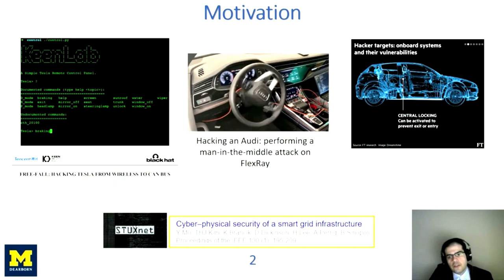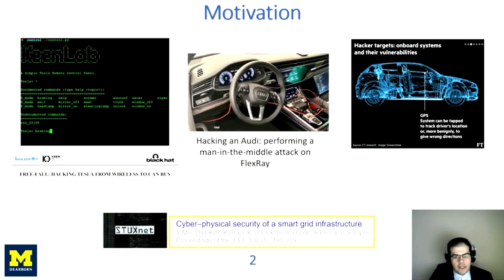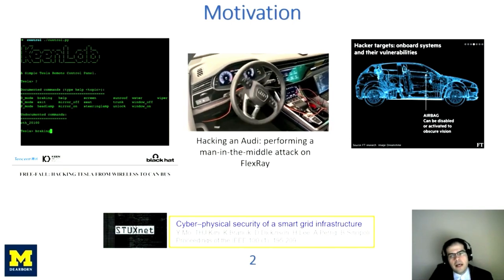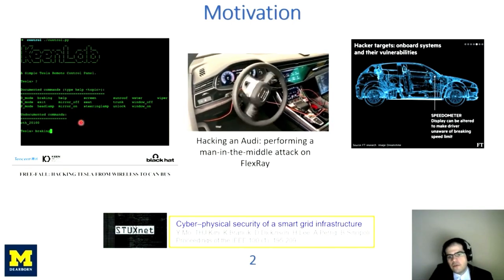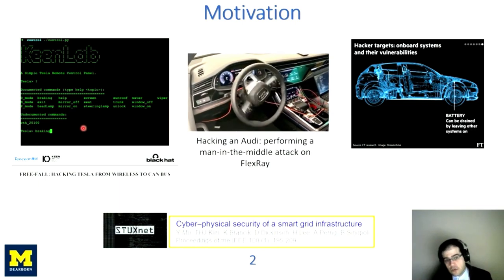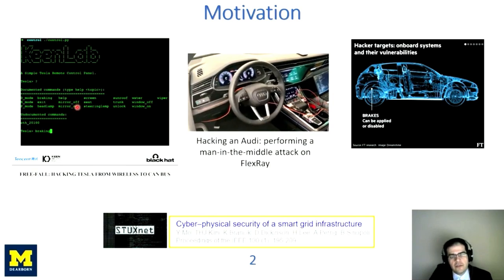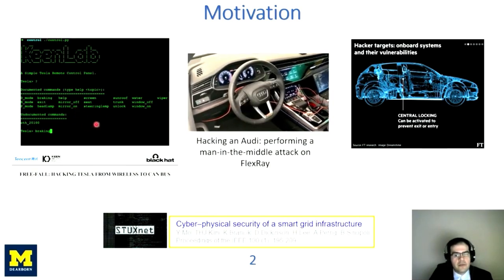The motivation for this work comes from the recent proliferation of hacking the ECUs and in-vehicle networks of vehicles. As we all know, one of the very first famous instances of such attacks, in addition to the great work of Valasek and Miller, was a CAN-based attack on a Tesla vehicle that was demonstrated by Keen Lab.